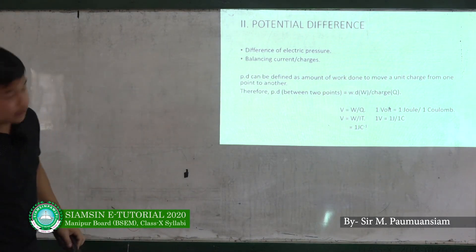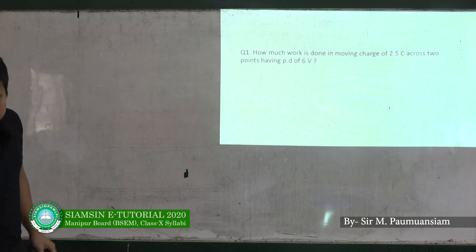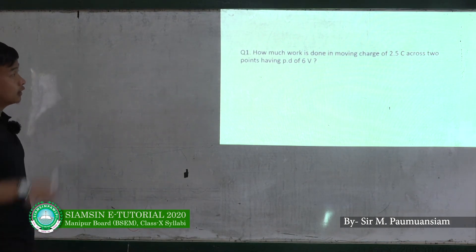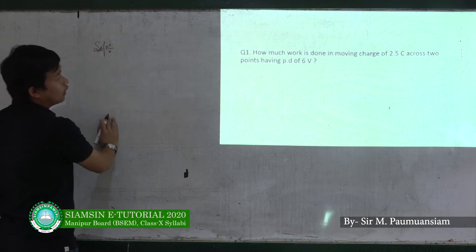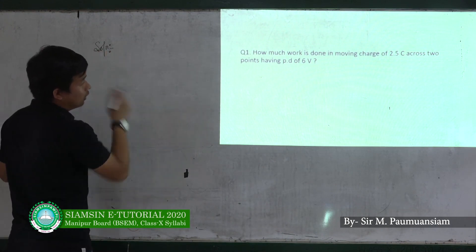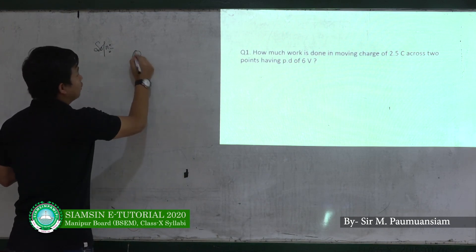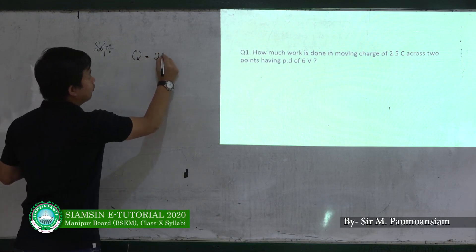The potential difference formula: How much work is done in moving a charge of 2.5 coulombs across a potential difference of 6 volts? Given: charge Q is equal to 2.5 C.